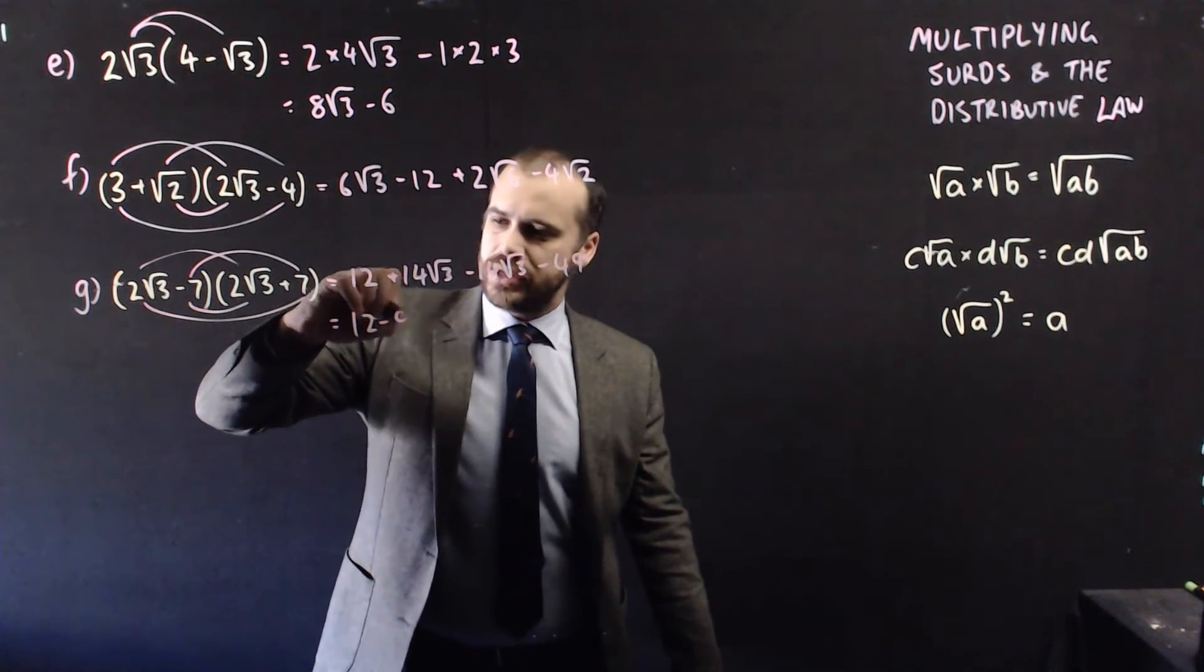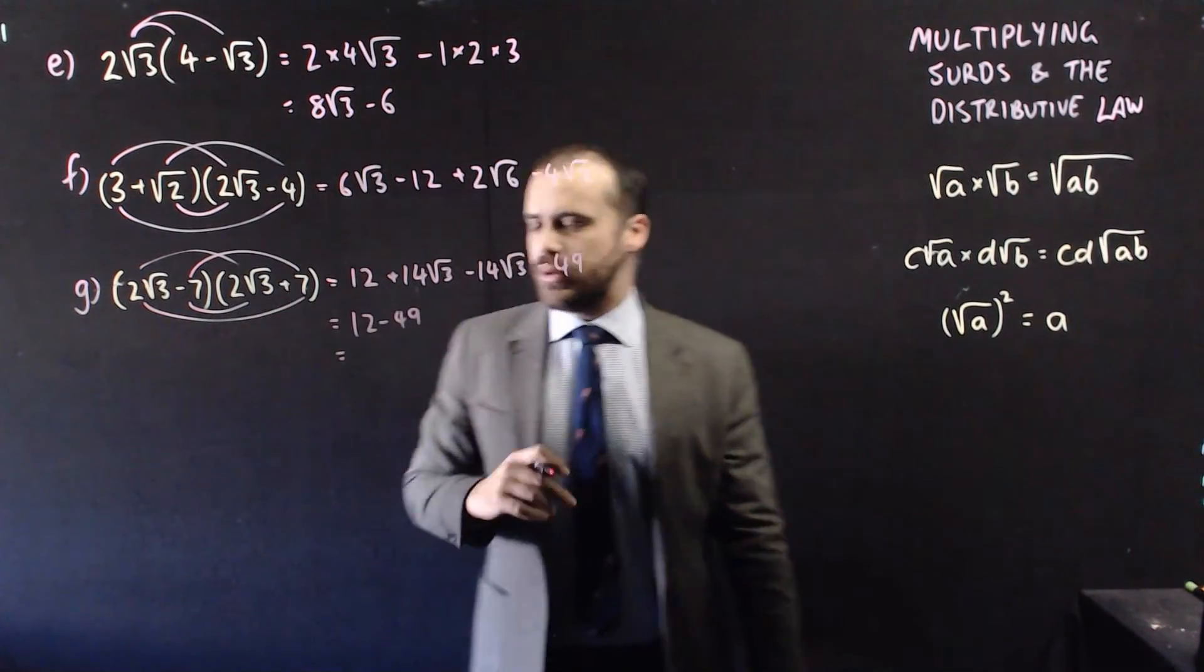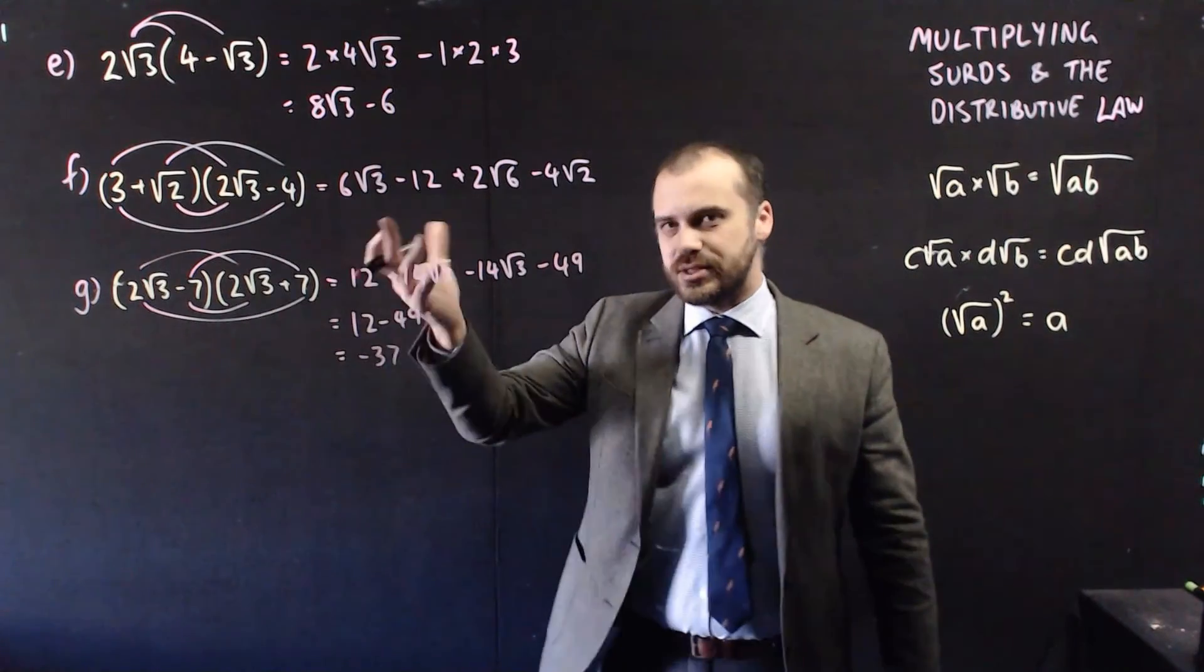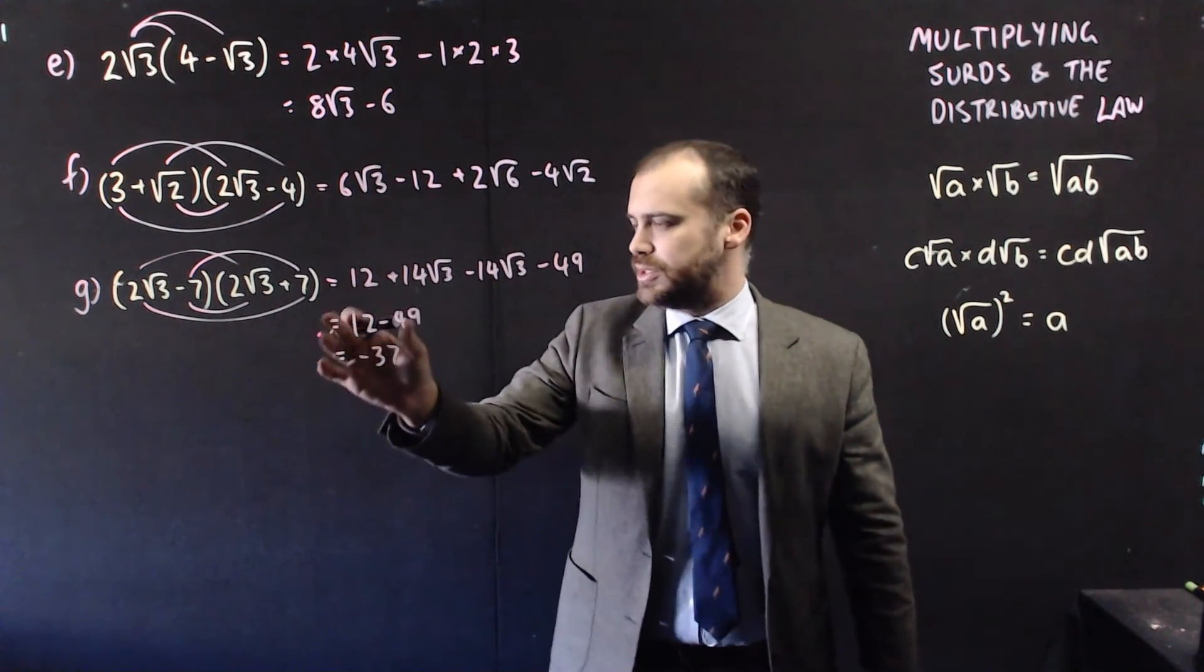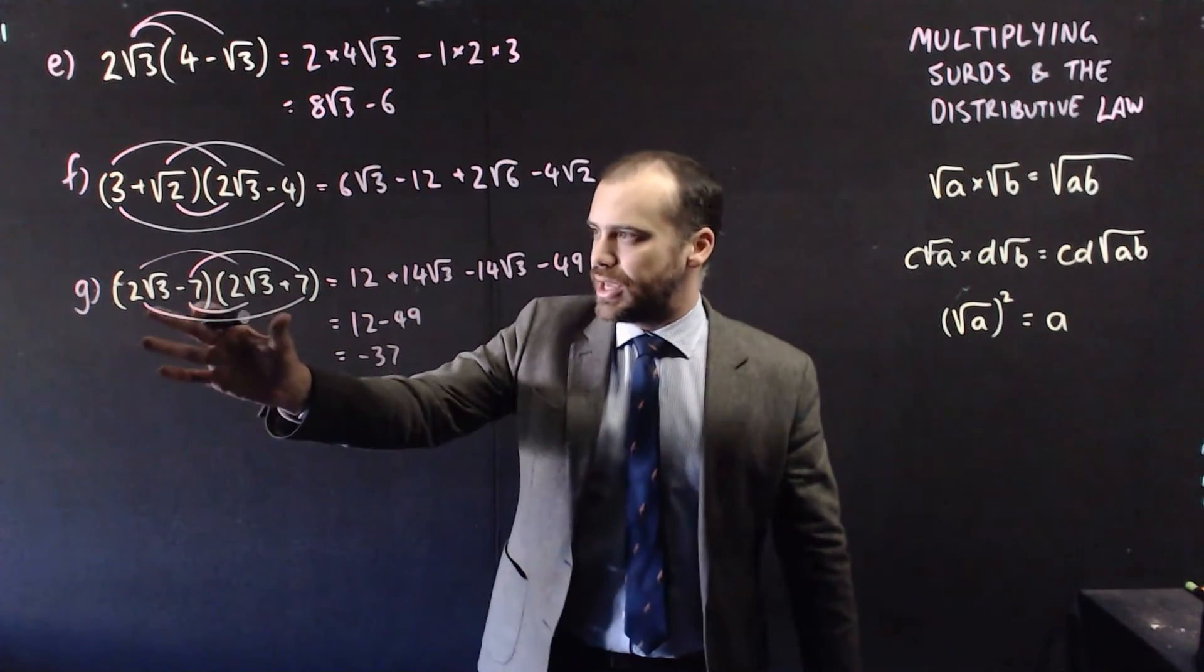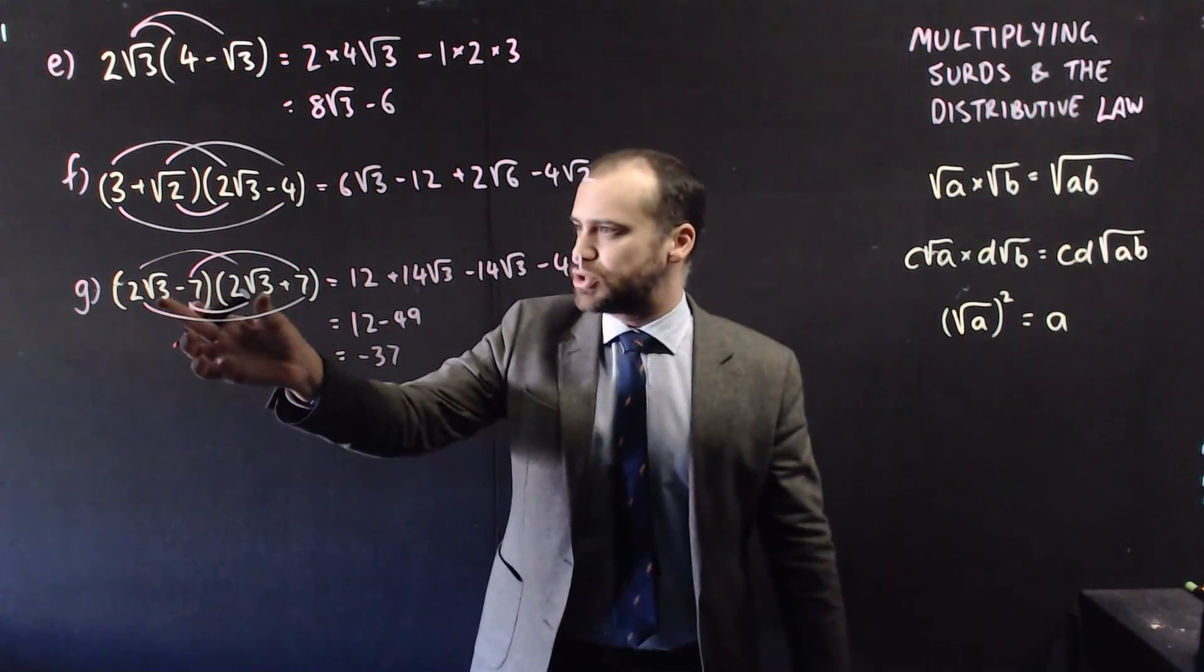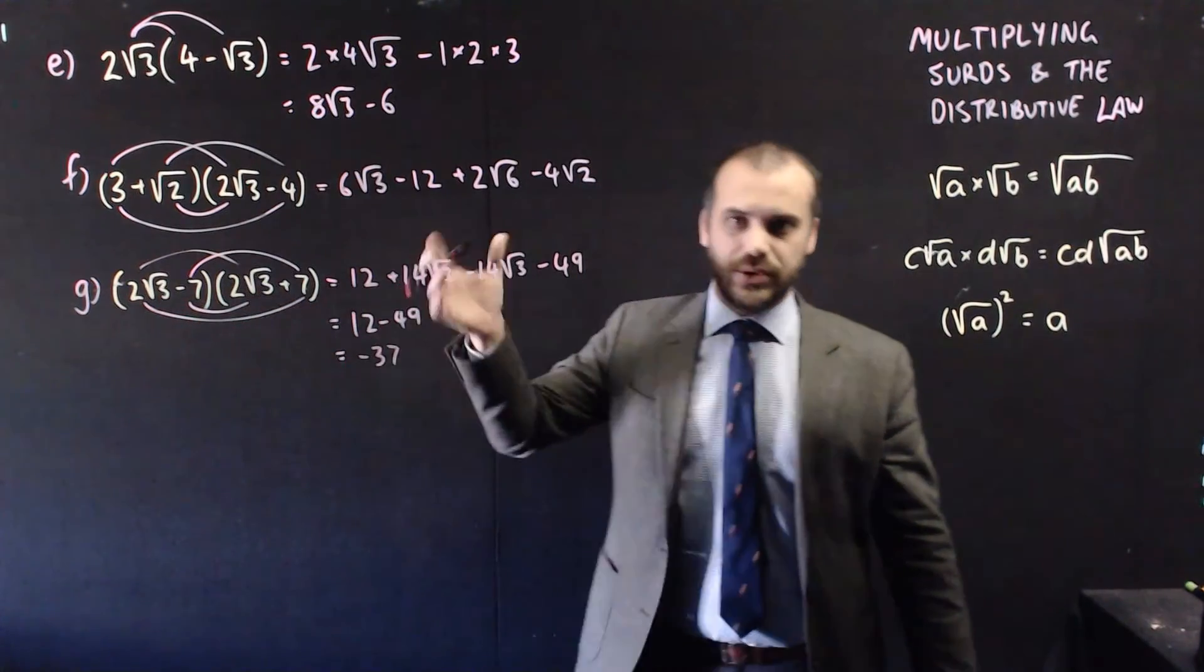12 minus 49, we get something, negative 37. This is a difference of two squares here, which is kind of handy when it comes to surds. Because you can see those surds fall out, because you end up squaring some surds, and you end up with just a number.